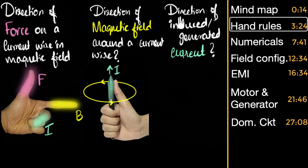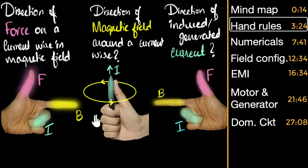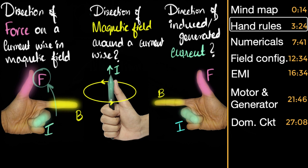What hand rule is going to help you find the direction of the induced or generated current? The answer is Fleming's right hand rule. The arrangement is very similar to the left hand rule — even the fingers represent the same things — and that's the reason why I used to get confused about when to apply which one. Here's the big difference: the major difference lies in what causes what. In the left hand rule case, there's already a current in the wire produced by a battery, and that current is causing a force on the wire. When current is causing force, we use the left hand rule.